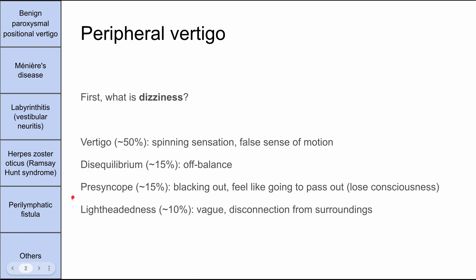Before going through each cause, let's define what we mean by vertigo. When a patient comes in, they're not going to immediately tell you they have vertigo. They might mention they have dizziness, and dizziness can mean a lot of things — it's not very specific. There's a paper by a couple of family docs that went through what patients meant by dizziness, and it seemed like in 50% of cases they actually meant vertigo — a spinning sensation or a false sense of motion.